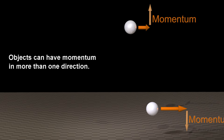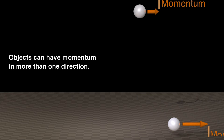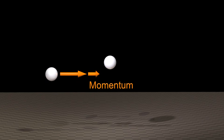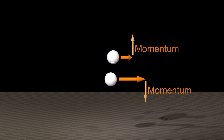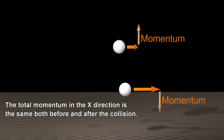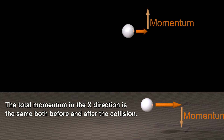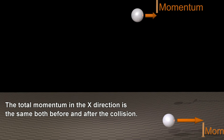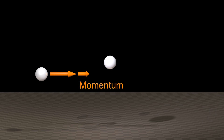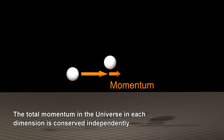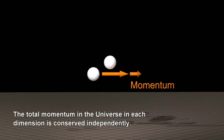Objects can have momentum in more than one direction. The total momentum in the X direction is the same both before and after the collision. And the total momentum in the Y direction is zero both before and after the collision. The total momentum in the universe in each dimension is conserved independently.